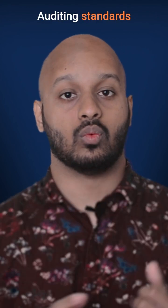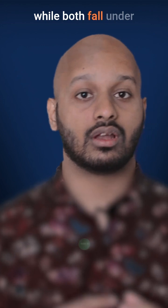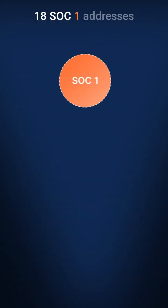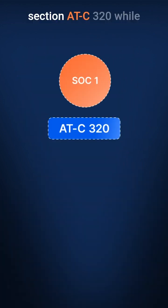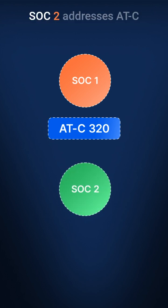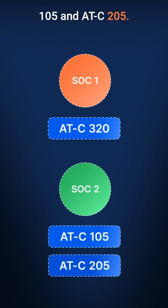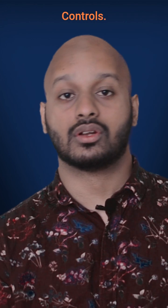Auditing standards. While both fall under the ambit of the SSAE 18, SOC 1 addresses section ATC 320 while SOC 2 addresses ATC 105 and ATC 205.